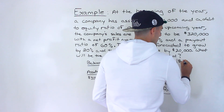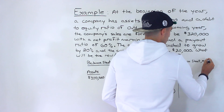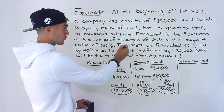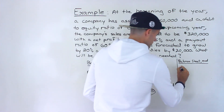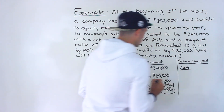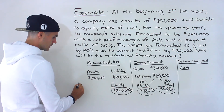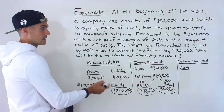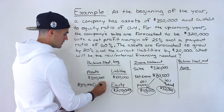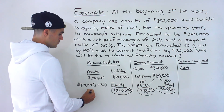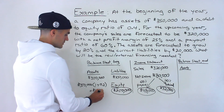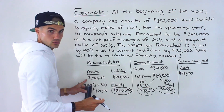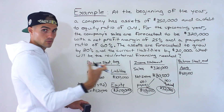Now for the balance sheet at the end of the year. The assets are forecasted to grow by 20%, so taking $350,000 and multiplying by 1.2 gives us $420,000. Alternatively, 20% of $350,000 is $70,000, adding that to $350,000 also gives $420,000.